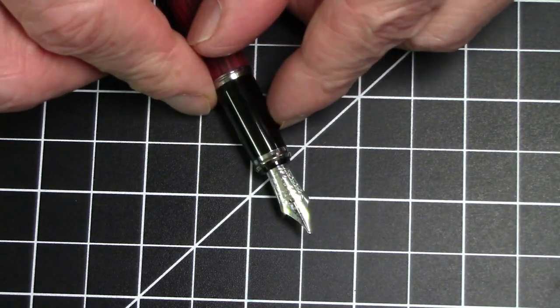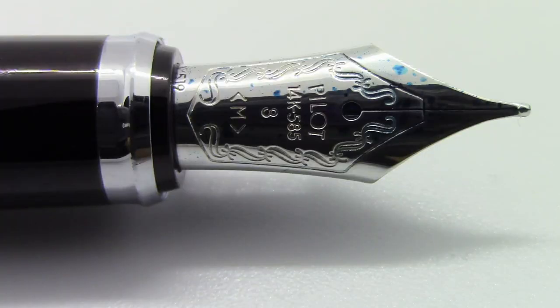Now let's talk about the nib. This is a really nice 14-carat rhodium-plated pilot nib. It says pilot 14-carat 585, a size 3. It's what they call the size 3 nib, and has an M for medium. And like most pilot gold nibs, has a date code at the very base of the nib, which indicates when the nib was manufactured.